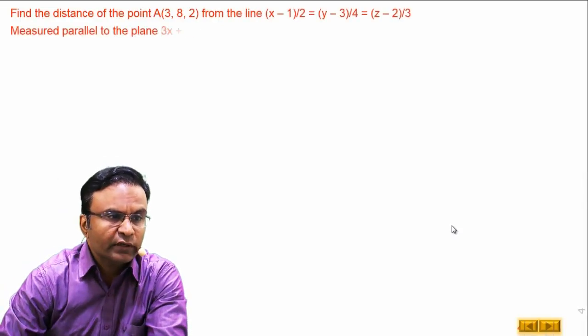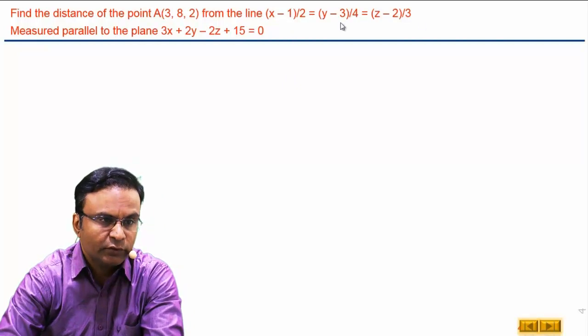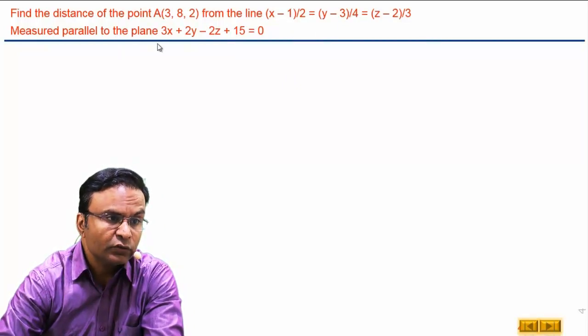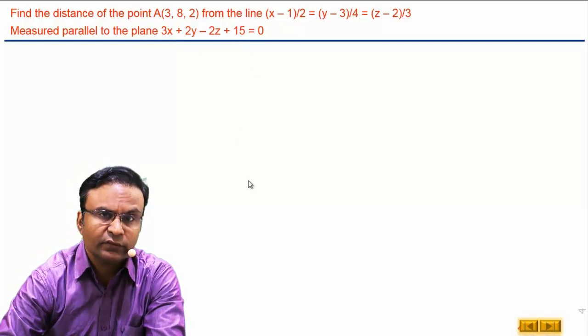Let's find distance of point A from this line measured parallel to the plane 3x plus 2y minus 2z plus 15 is equal to 0.